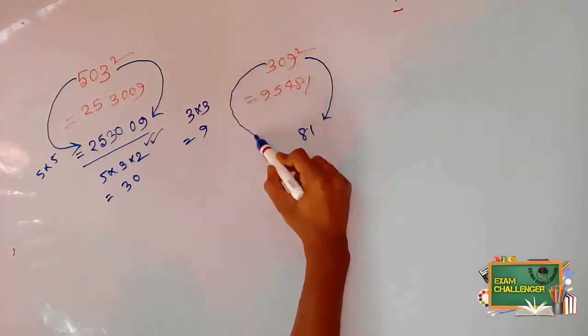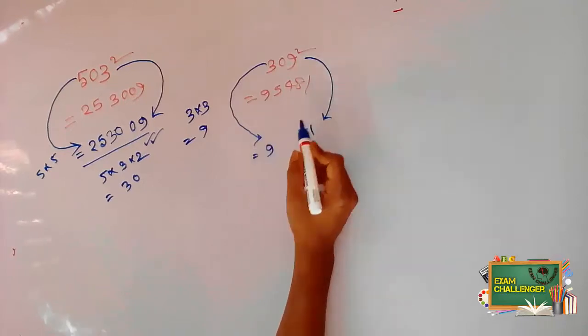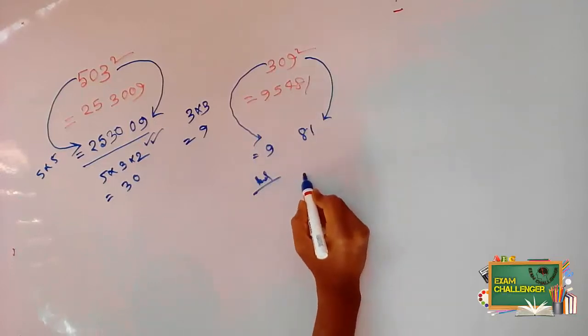Since the square of 3 is not here, we don't give 0. So next, if we do 3 into 9 into 2.